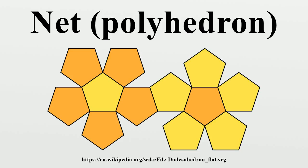There exist non-convex polyhedra that do not have nets, and it is possible to subdivide the faces of every convex polyhedron so that the set of subdivided faces has a net. In 2014, Mohamed Ghomi showed that every convex polyhedron admits a net after an affine transformation.